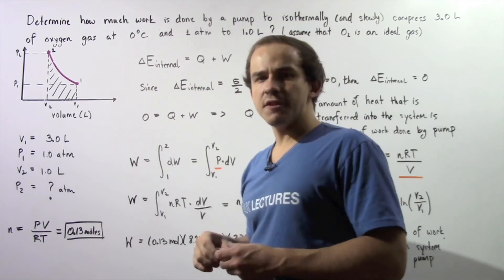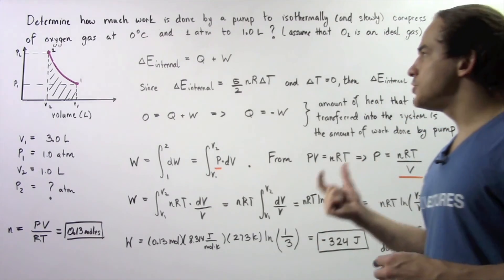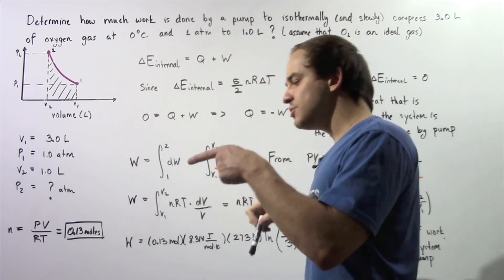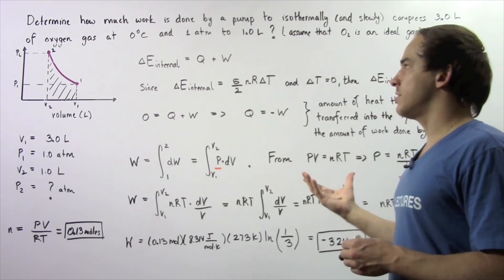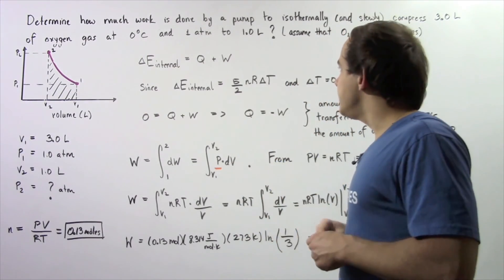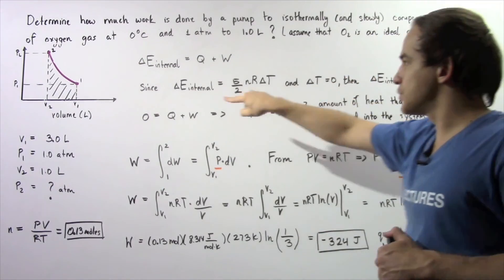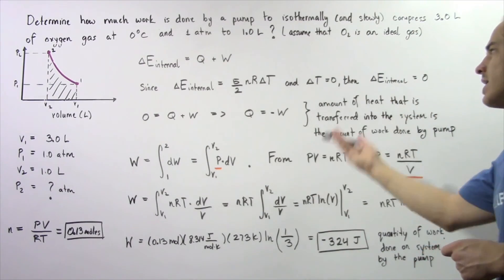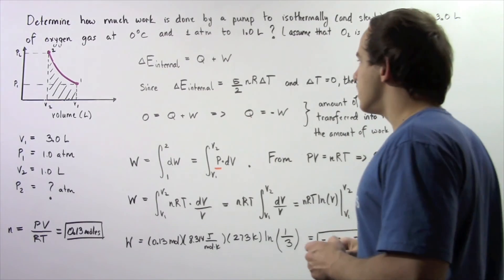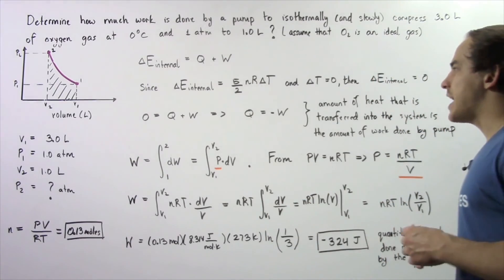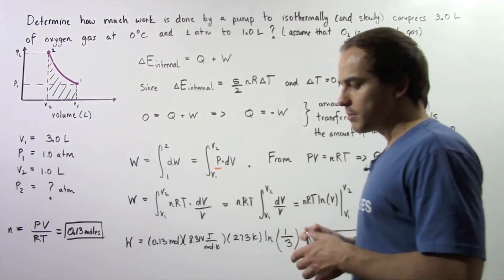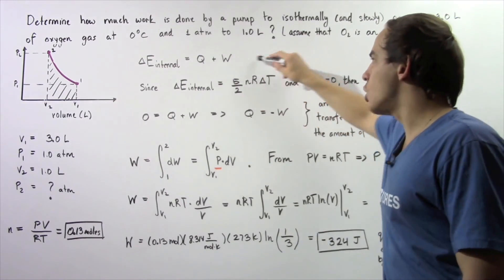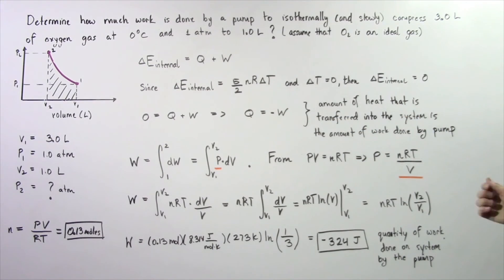Let's recall the first law of thermodynamics. The change in internal energy of our ideal diatomic gaseous system equals the sum of heat transferred into our system plus the work done by the surroundings on our system. For a diatomic ideal gas, the change in internal energy equals 5/2 × N × R × ΔT. Because we're dealing with an isothermal compression, ΔT = 0, so the change in internal energy is equal to 0.